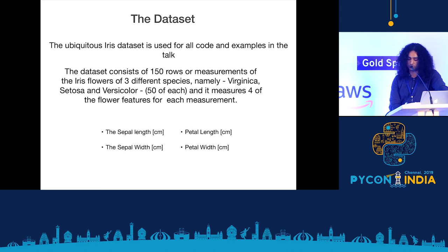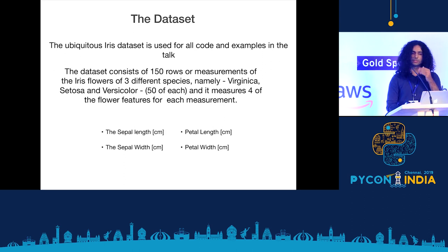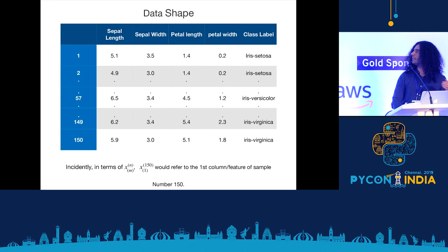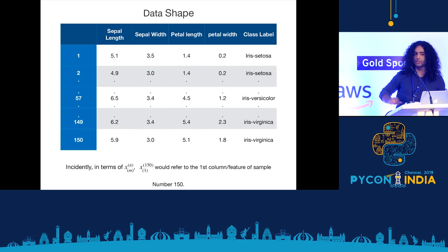The Iris dataset has 150 samples of the Iris Flower with three different species — Virginica, Setosa, and Versicolor — with 50 samples of each and four measurements of each sample. This is what our data looks like. When we say X[150, 1], we mean the first column of the 150th sample.